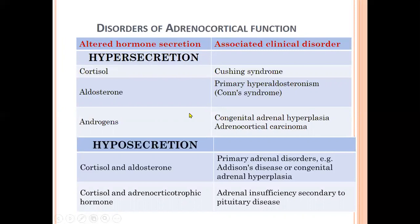There are different disorders of adrenal cortical function. Hypersecretion of cortisol produces Cushing syndrome; hypersecretion of aldosterone produces Conn syndrome; or there may be primary adrenal cortical carcinoma. Hyposecretion leads to conditions such as Addison's disease or congenital adrenal hyperplasia, and secondary adrenal insufficiency due to pituitary diseases.